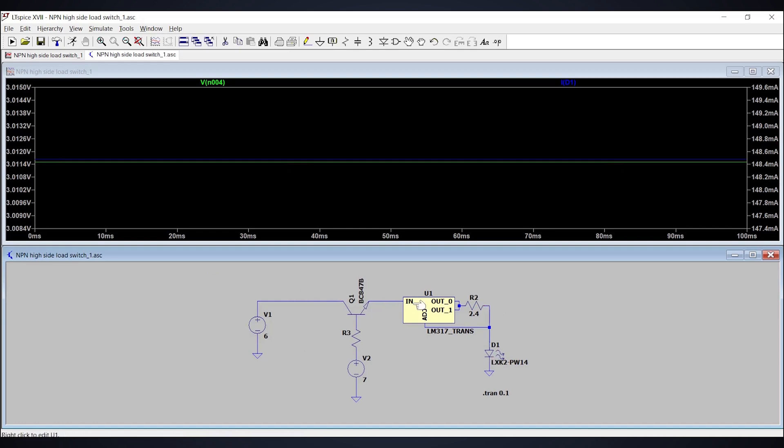So in this case, the emitter is at 6 volts and the base is at 7 volts. So the potential difference between base and emitter is 1 volt. That's why this transistor has turned on.